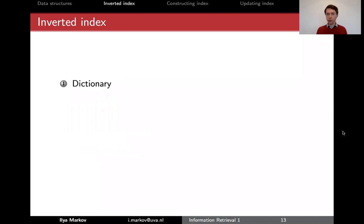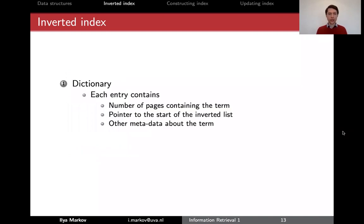First it's a dictionary which contains all the words that are present in our collection. And the dictionary, what does it have? It has again some meta information but not about documents, about terms.